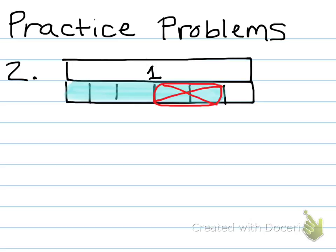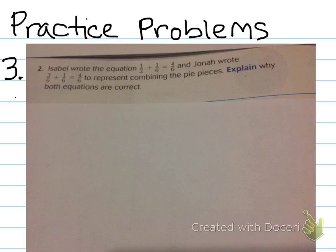Last practice problem. It's a word problem. Isabel wrote the equation one-half plus one-sixth equals four-sixths. And Jonah wrote three-sixths plus one-sixth equals four-sixths, to represent combining the pie pieces. They're talking about Ms. Clark from earlier. Explain why both equations are correct. You might need to think back to chapter six and think about equivalent fractions to answer this one. Have a great night.